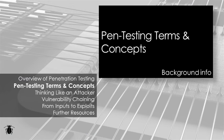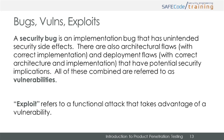Now let's move on to some terms and concepts relating to penetration testing. A security bug is generally an implementation bug that has unintended security side effects. Properly implemented architecture or designs may also have flaws that have potential security implications. All of these combined are referred to as security vulnerabilities. You may hear the terms vulnerability and security bug used interchangeably. A typical example of a security bug would be the use of an unsafe string copy function. Exploit refers to the process of taking advantage of a vulnerability, such as a buffer overflow attack on an unsafe string copy function.